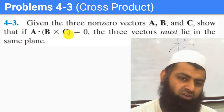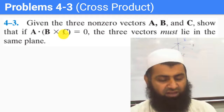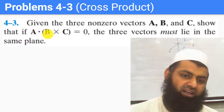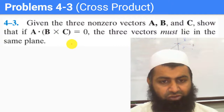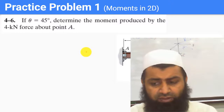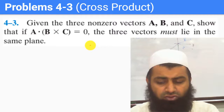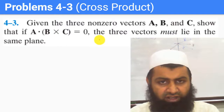There is one trivial case to consider: if b cross c is already zero, that means b and c are parallel. In that case a dot zero equals zero automatically, and any vector a together with b and c can still form a plane. That trivial case must also be handled for mathematical rigor. There are a few more examples in the lecture slides that we will go through during our regular online class. That is it for today — see you next time, inshallah. Assalamu alaikum warahmatullahi wabarakatuh.